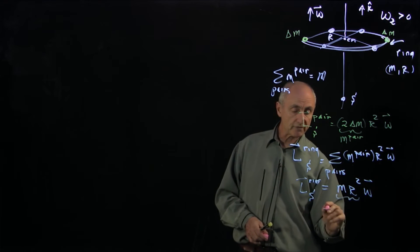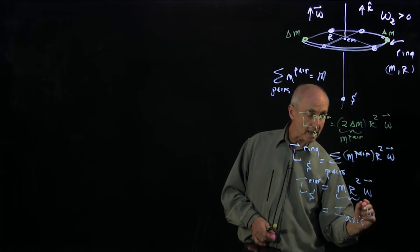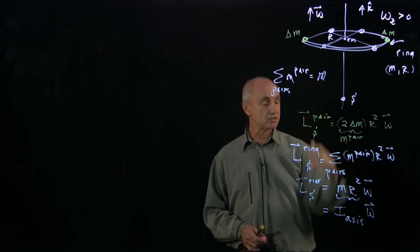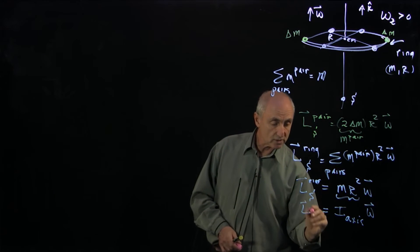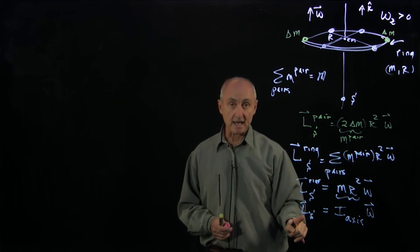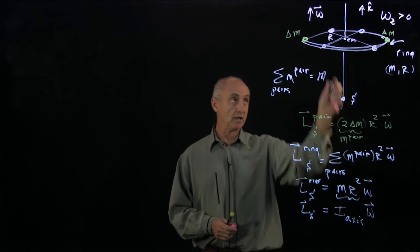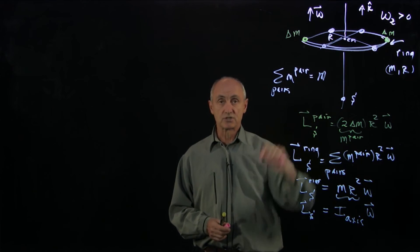This is the moment of inertia about the axis for the ring, because all the mass is distributed a distance r away. And so we see for a continuous symmetric body like a ring, again, because it's symmetric, the angular momentum only has a component along the axis of rotation.